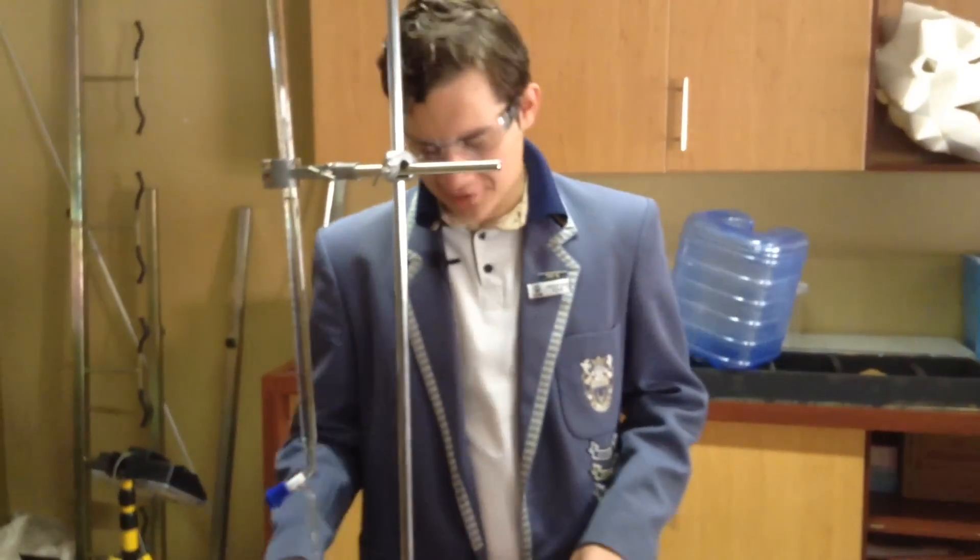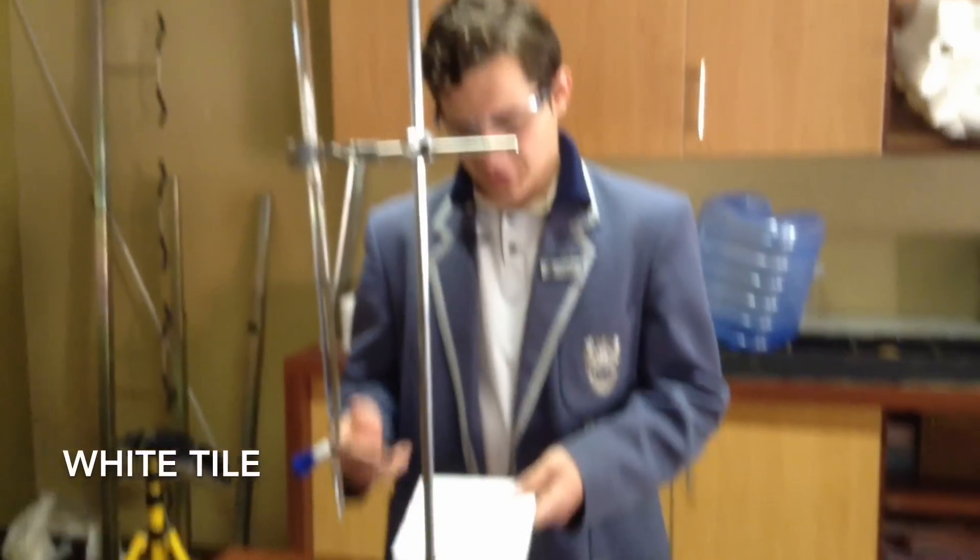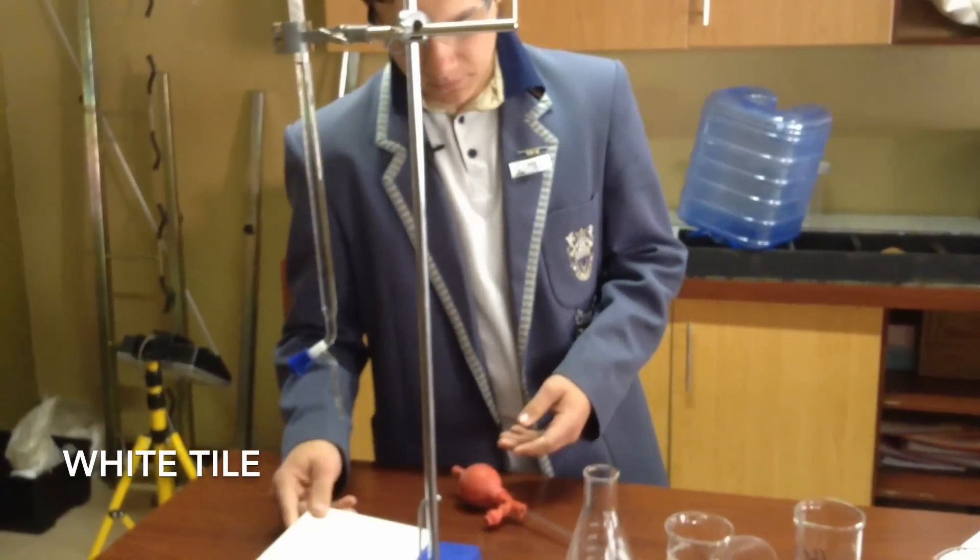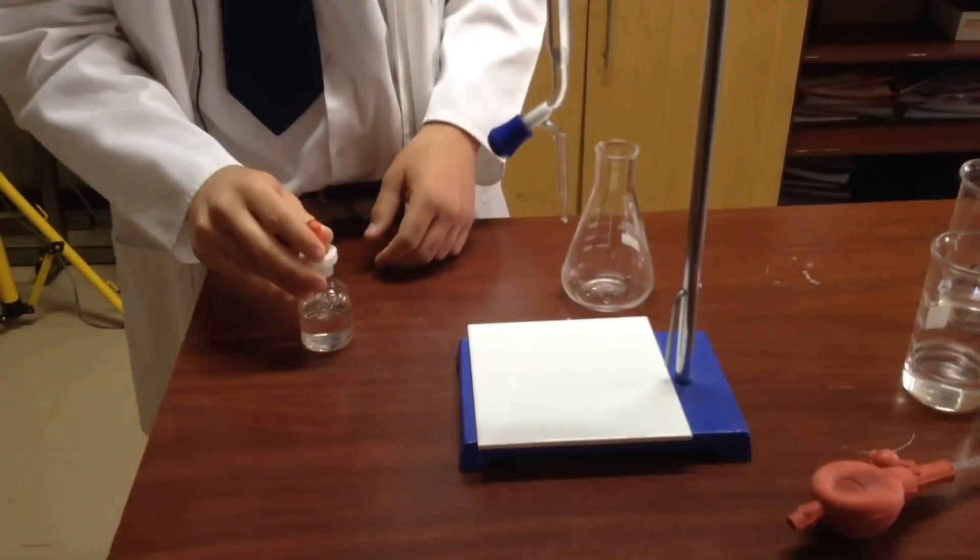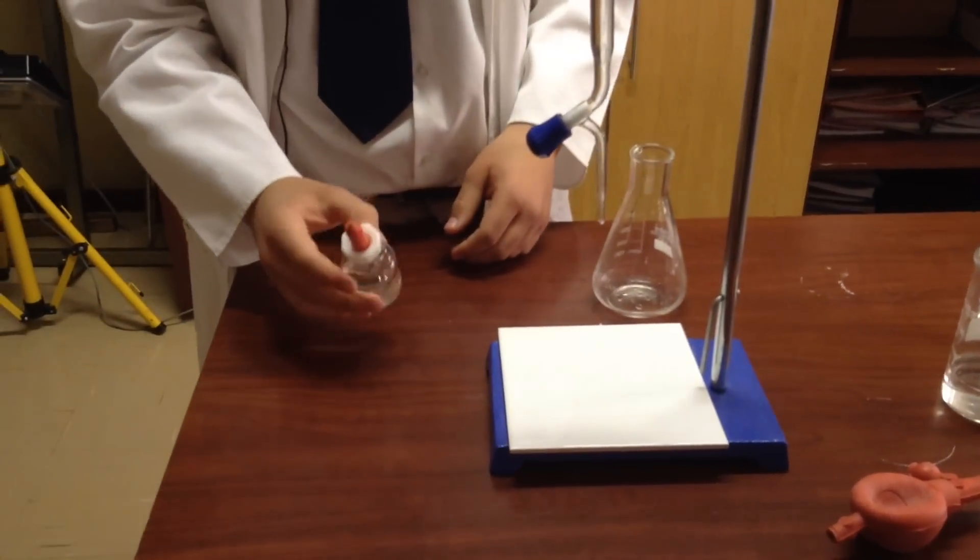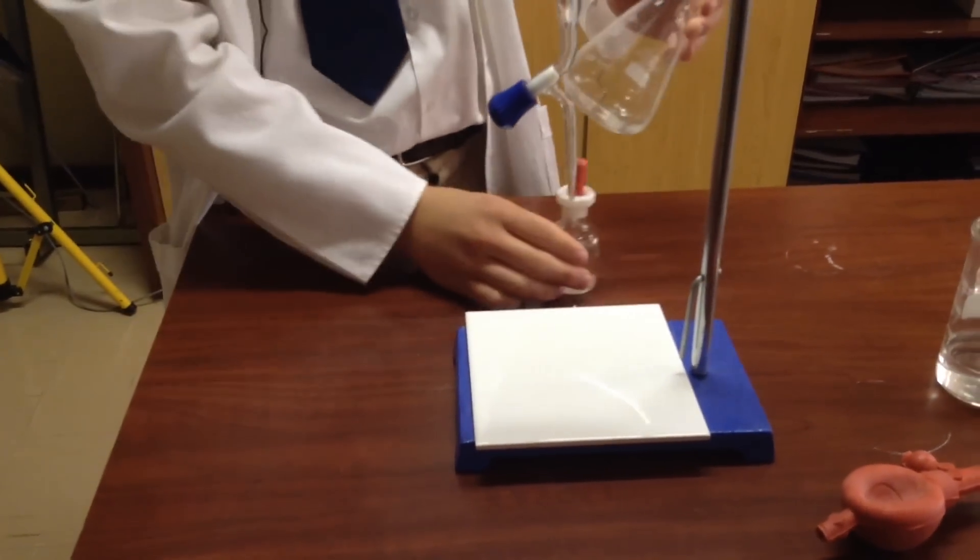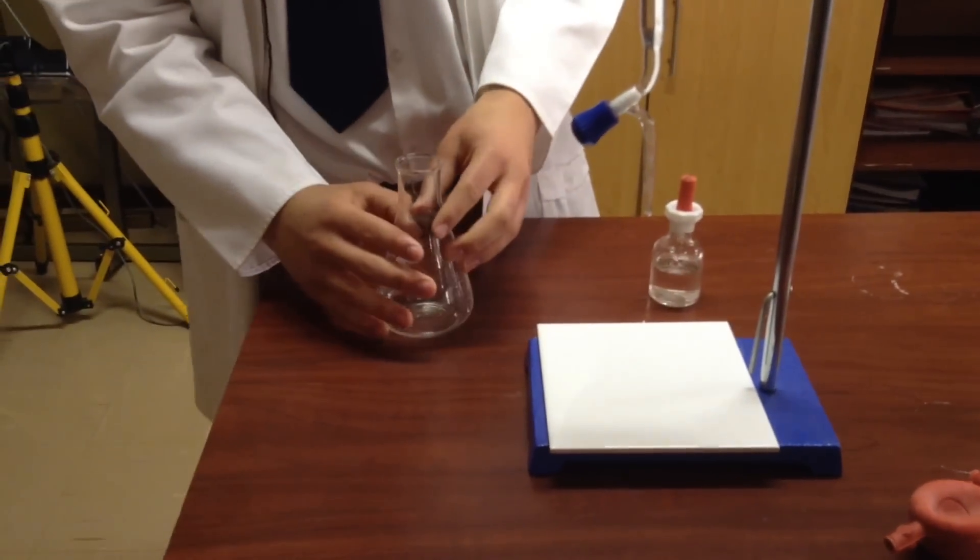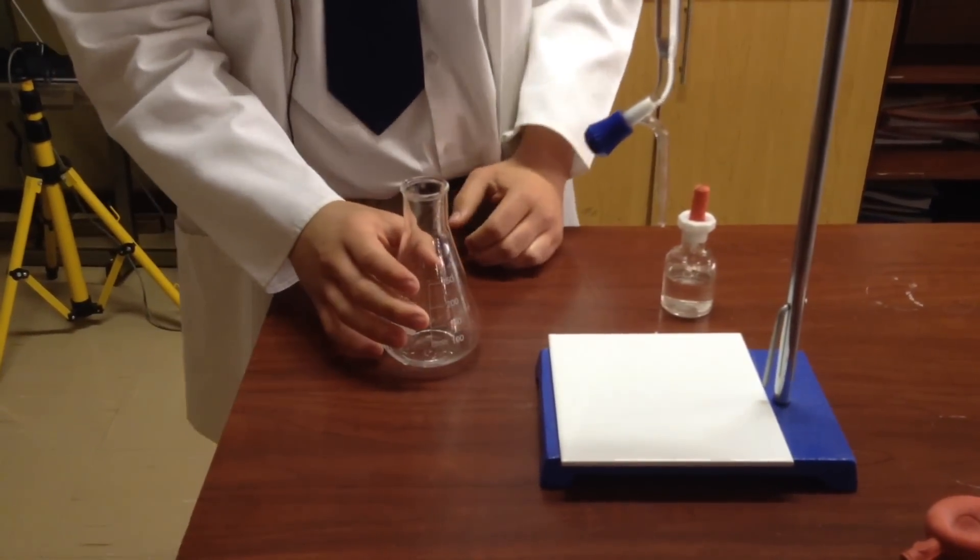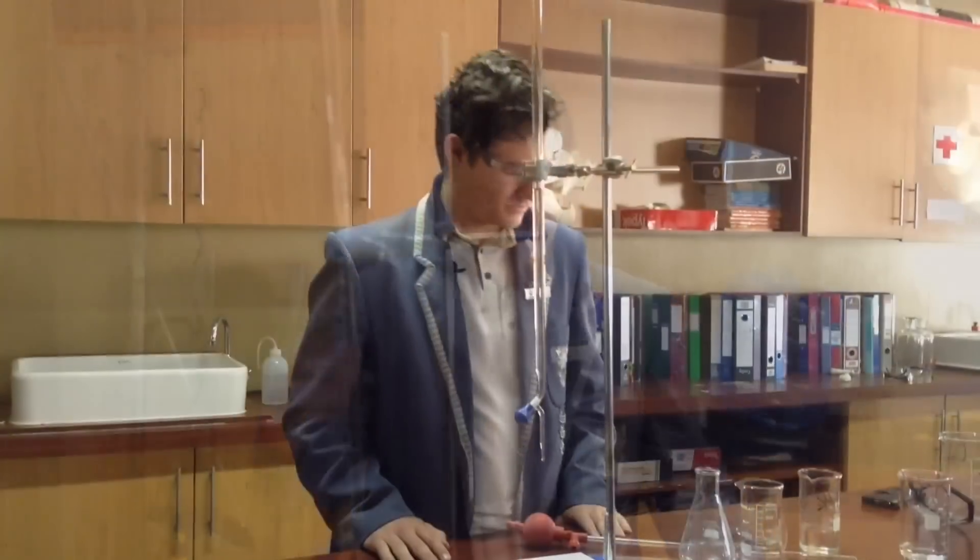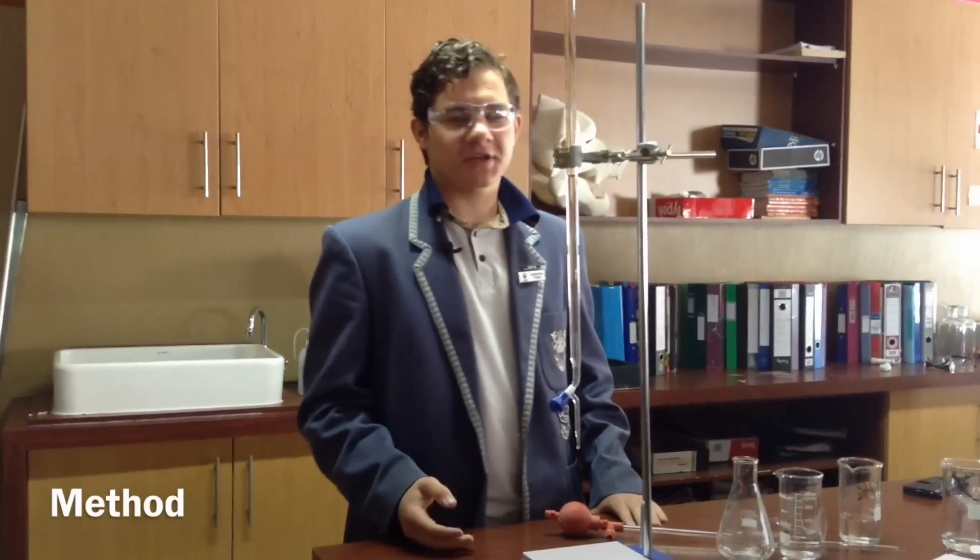And then you're also going to need a white tile, because while we do our titration we want to see the color of our results. And then we're also going to need phenolphthalein, which is going to act as our indicator. And then finally a conical flask which is going to hold our unknown solution, and finally you're going to need a retort stand to hold your burette.